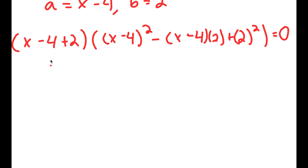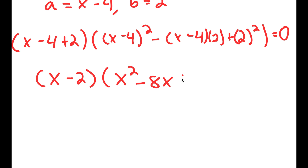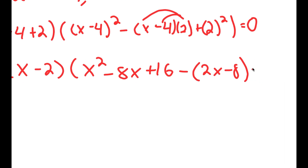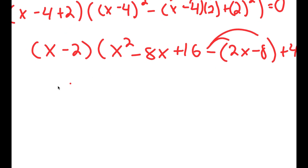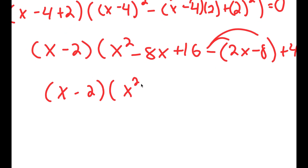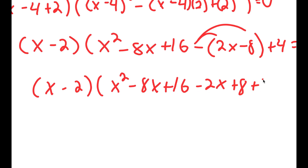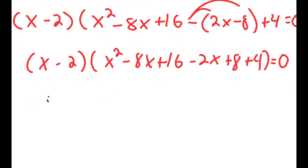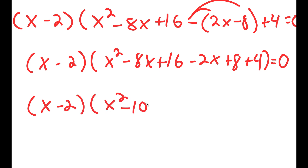Now if I simplify this, I get x minus 2 times x squared minus 8x plus 16 minus — I can distribute the 2: 2 times x is 2x and 2 times negative 4 is negative 8 — plus 4. If I distribute the negative sign, I get x minus 2 times x squared minus 8x plus 16 minus 2x plus 8 plus 4 equals 0, which turns into x minus 2 times x squared minus 10x plus 28 equals 0.